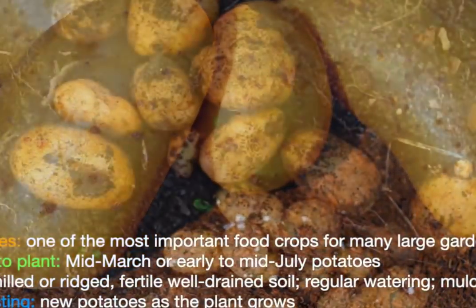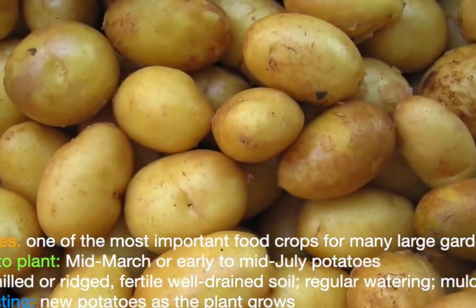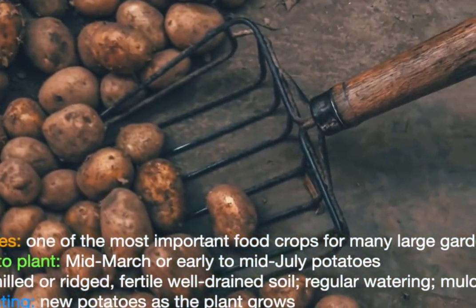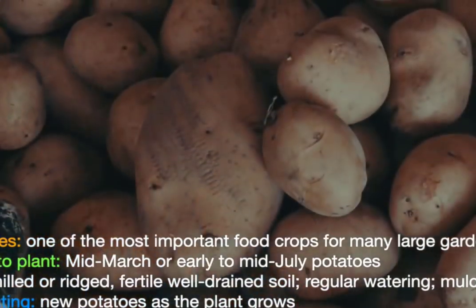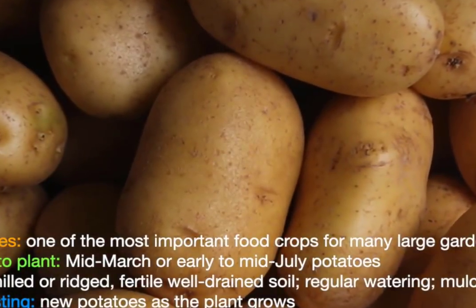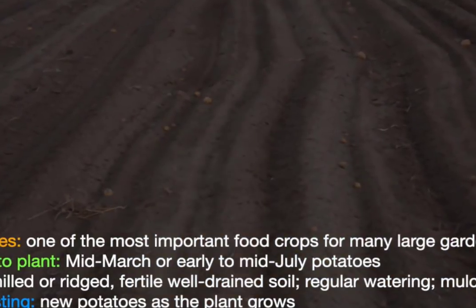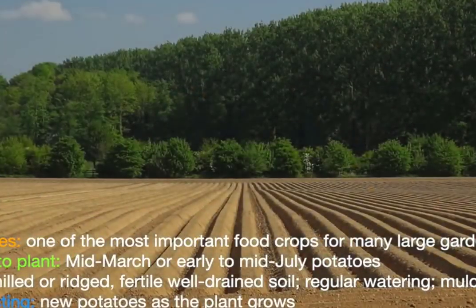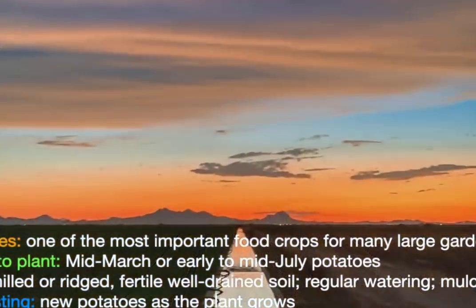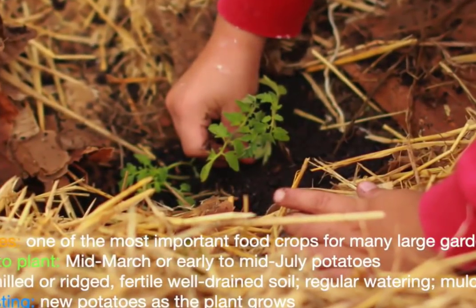Potatoes are one of the most important world food crops and are a staple for many large gardens. Mid-March is a traditional time to plant spring potatoes, while early to mid-July is a time for fall harvest. To encourage large yields and prevent sun burning, potatoes should be hilled by pulling loose soil along the row as the crop grows. Potatoes like a fertile, well-drained location with loose, friable soil. Potatoes need regular, consistent watering, and mulches can be useful in holding moisture near the plant.